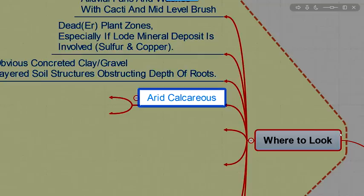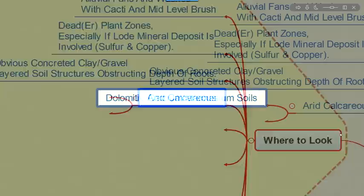Arid and calcareous. So we're looking for things that form these limestone salts that have evaporated and formed concrete materials. Dolomitic calcium magnesium soils. Caliche deposits. These are concrete like lime minerals.